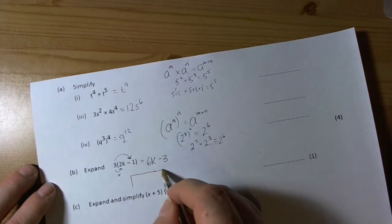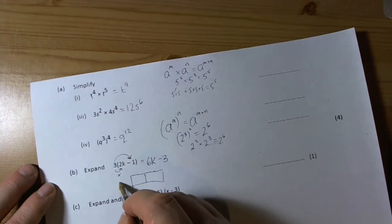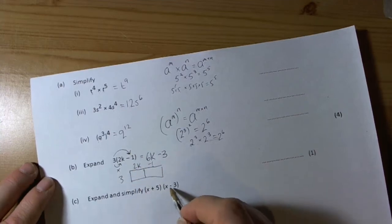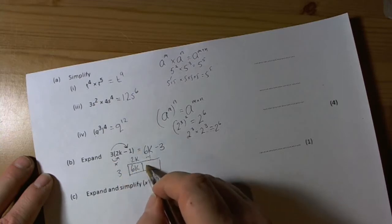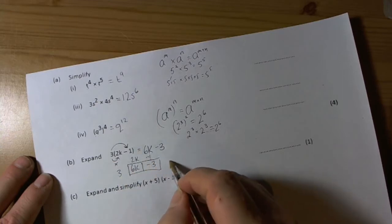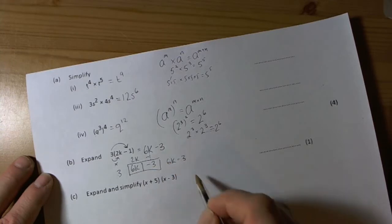Another way of thinking of that, if you prefer it, is you could do a box: 3, 2k, minus 1. So 3 times 2k is 6k. 3 times minus 1, or 3 times negative 1, is negative 3. So in the box you get 6k take away 3.